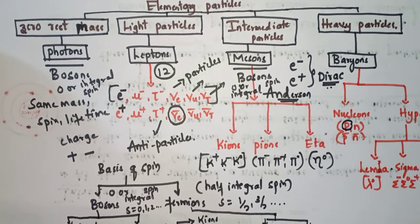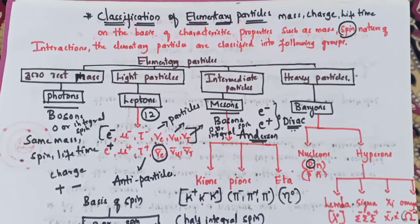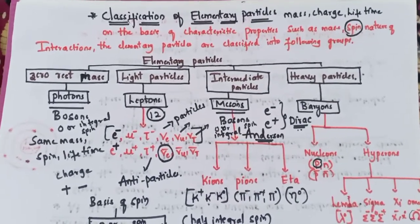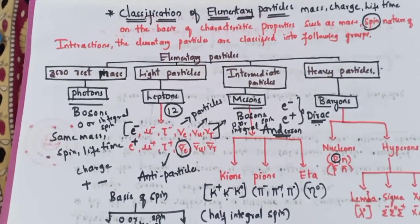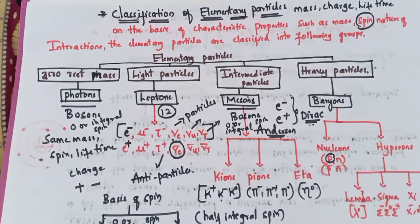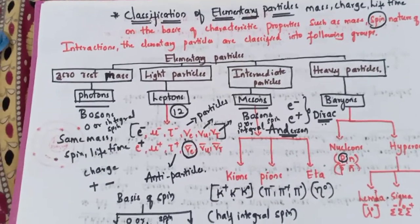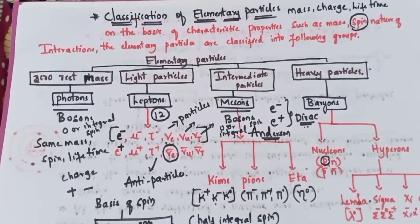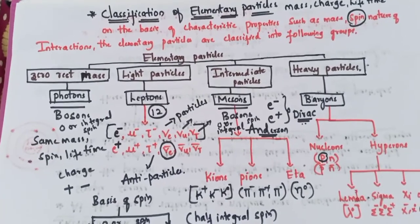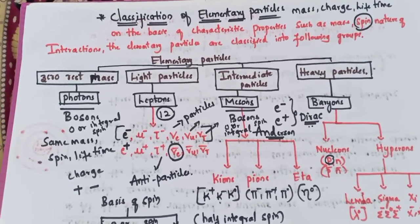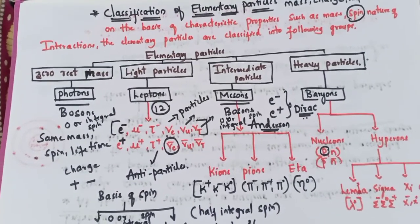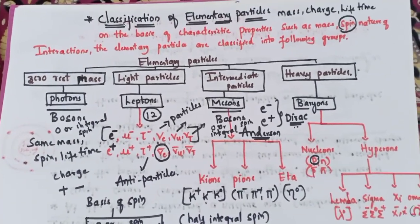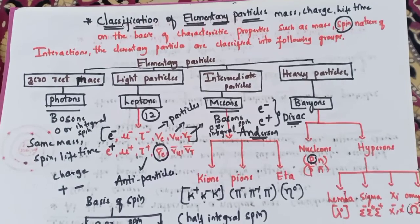I hope you all understood this classification well. The structure of the nucleus is very complex — in the nucleus not only protons and neutrons are present, but there are nearly 100 elementary particles. No theory has yet been developed to account for the origin of these nearly 100 particles. Thank you for watching, please subscribe to our channel.